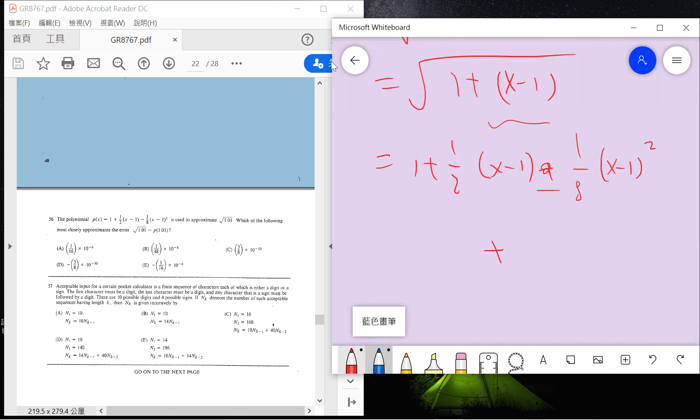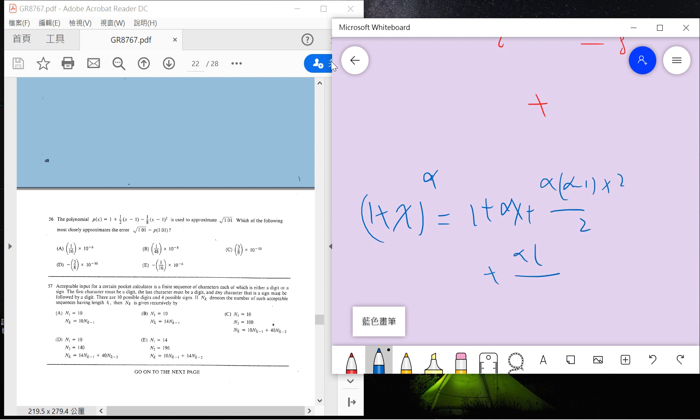Now since we want to know the error, we need to know the third term. So let me remind you guys that x to the α power is basically 1 plus αx, plus α(α-1)x² divided by 2, plus α times (α-1)(α-2)x³ divided by 3 factorial.